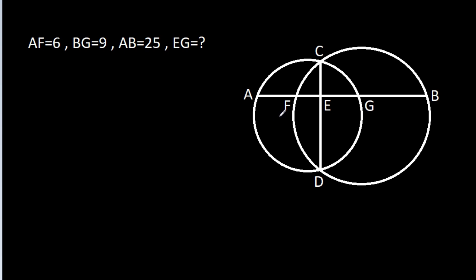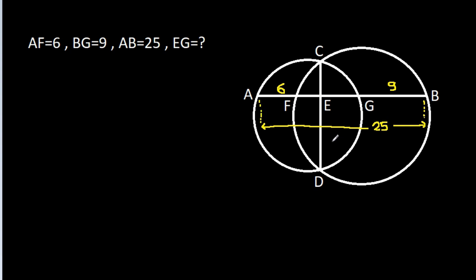In this video, we have been given that AF is 6, BG is 9, and AB is 25. We have to find EG.